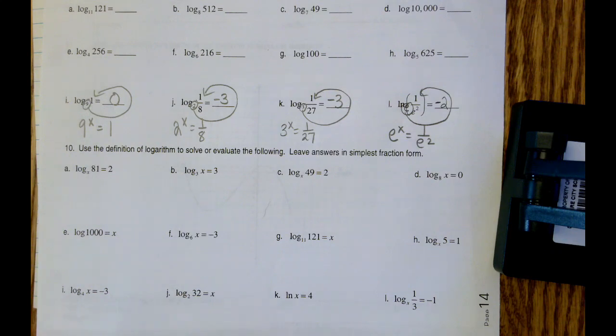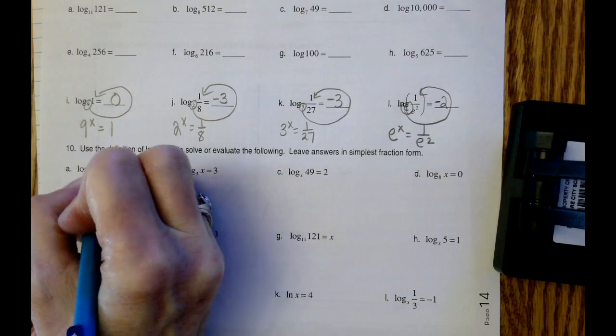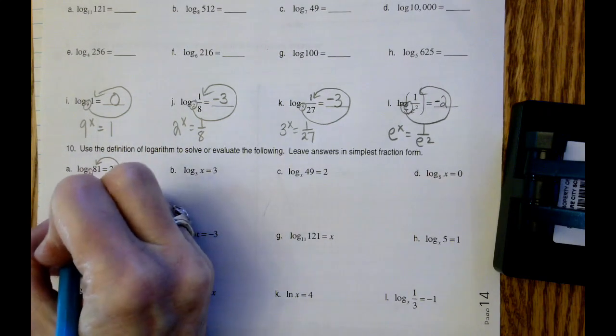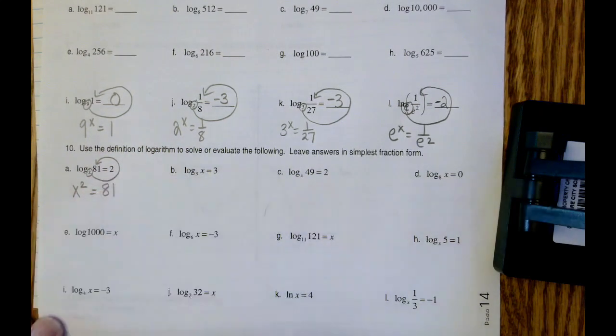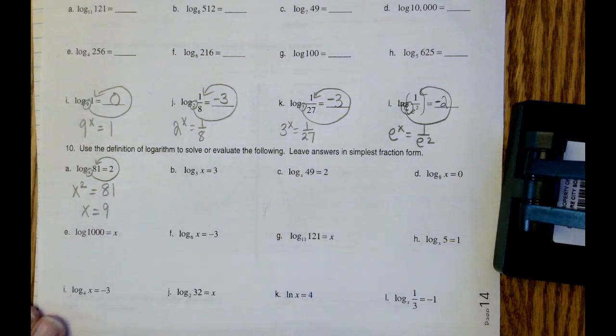We've got a logarithm so we're going to get rid of the logarithm by using the curly q method and we're going to rewrite this as an exponential. So x to what power equals 81? x equals 9. 9 times 9 is 81.